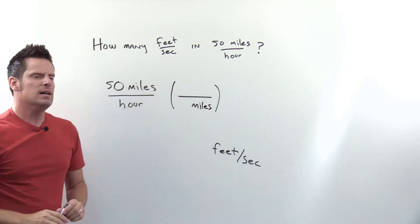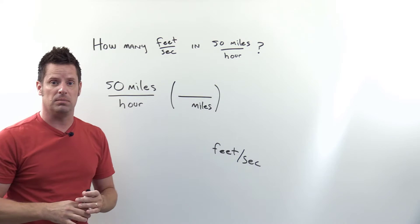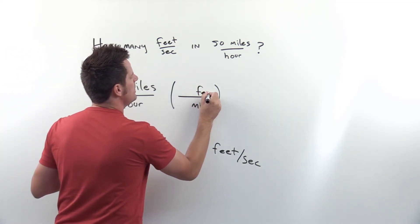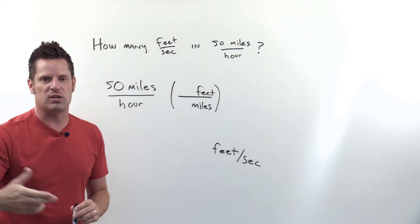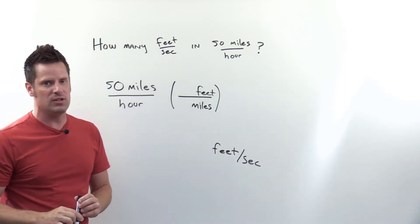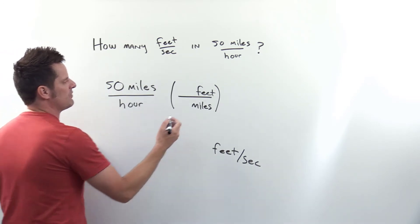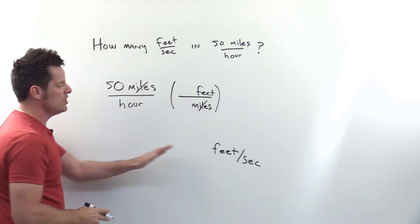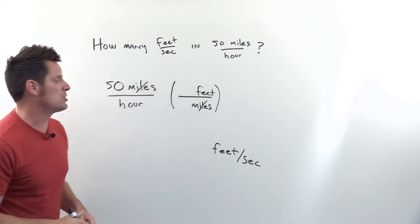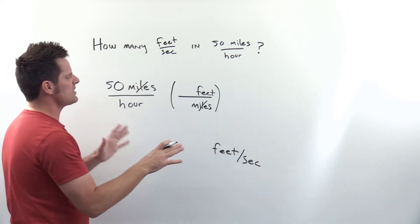Can we directly relate miles to feet? Yes — there are a certain number of feet per mile, which we can look up. So we cancel out miles and now have feet in the numerator. Are we at our destination units yet? No — we now have feet per hour, but we need feet per second, so we need another set of parentheses.